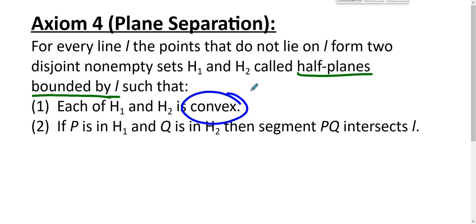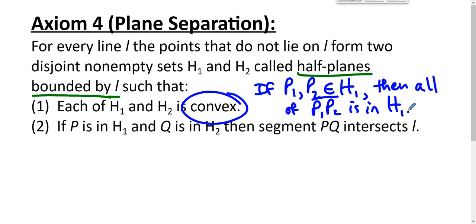Well, convex means that if P1 and P2 are in H1 or H2, then all of segments P1, P2 is in H1 or H2. So when we say that H1 is convex, we mean you give me two points in the half plane, the entire segment is in the half plane. If any part of the segment breaks out of H1, then H1 is not convex.